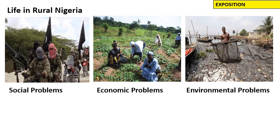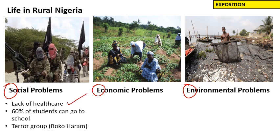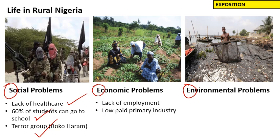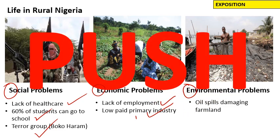What's it like in rural Nigeria in the countryside? Looking at social, economic and environmental problems: if you live in rural Nigeria, there is a lack of healthcare — not many hospitals available. In the rural areas of Nigeria, only 60% of students can go to school, much less than in Lagos. There has also been some terrorism in rural areas, giving people fear. Economically, there is a lack of employment — most jobs available are in farming, which are low paid primary industry jobs.